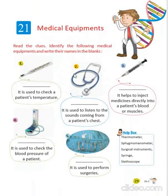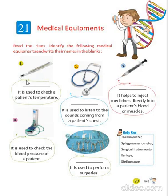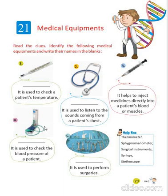Now come to Chapter 21, Magical Equipments. By looking at the picture, we have to tell the name of that magical equipment. It is a thermometer — it is used to check a patient's temperature. It is a stethoscope — it is used to listen to the sounds coming from a patient's chest. It is a syringe — it helps to inject medicines directly into a patient's blood or muscles. It is a sphygmomanometer — it is used to check the blood pressure of a patient.